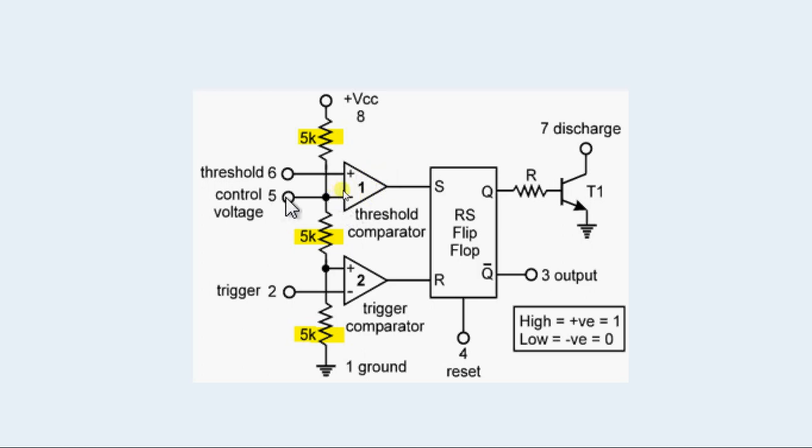Pin 5 by default is set to 2/3 of the supply voltage. Pin 5 is the reference voltage for this comparator, so the moment any voltage applied at pin 6 exceeds 2/3 of the supply voltage, then this comparator goes high.